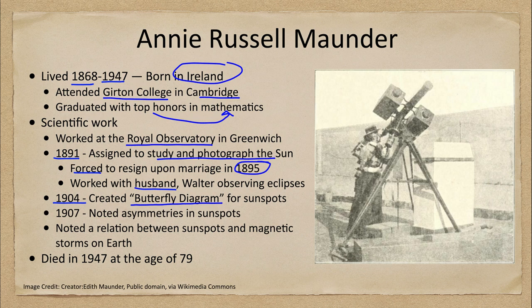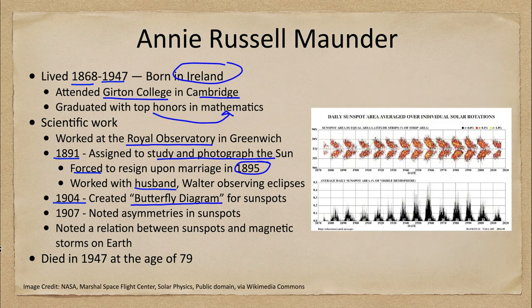What is the butterfly diagram? The butterfly diagram tells us something about the sun. The top of the diagram shows the butterfly pattern, while the bottom shows the number of sunspots as it rises and falls with about an 11-year cycle.